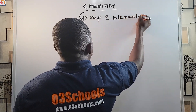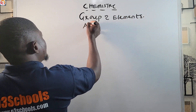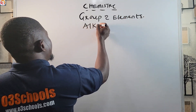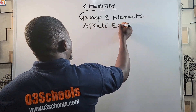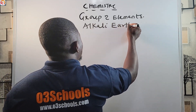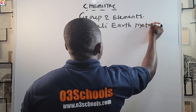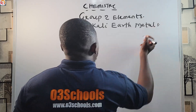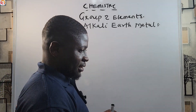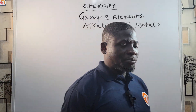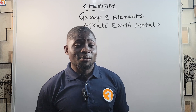Group two elements are the ones we call the Alkaline Earth Metals.